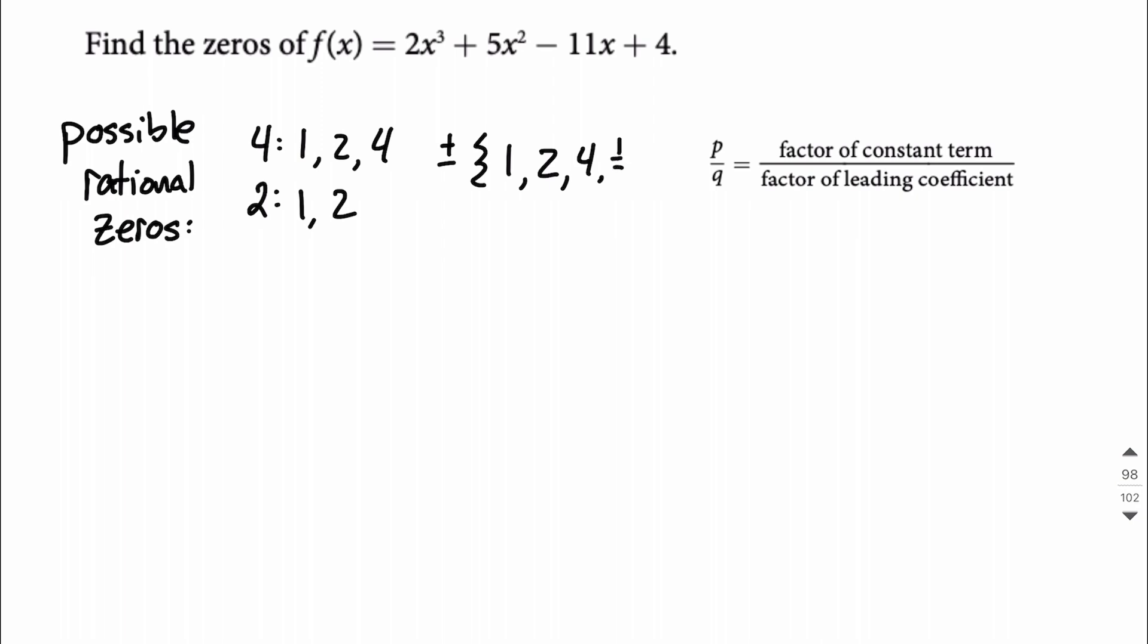And then we could line these all up over the 2. So we could say 1 over 2, or we could say 2 over 2, but 2 over 2 is the same thing as 1, and that's already in our list. Or we could try 4 over 2, but again, 4 over 2 is the same thing as 2. That's already in our list, so we're not worried about that one. So let's get rid of that.